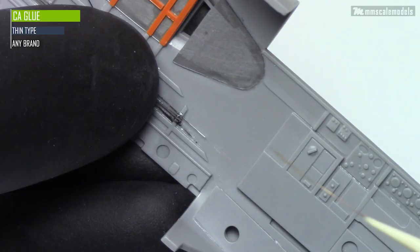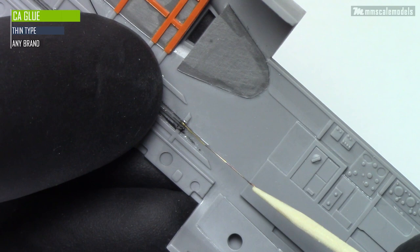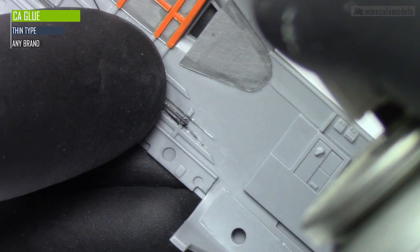Now let's add some control cables. On the port side I used fishing line. It reacts very well to CA glue and the bond is excellent. Using CA kicker as usual helps a lot.